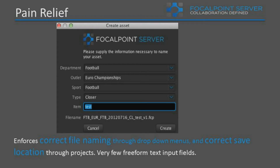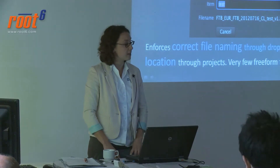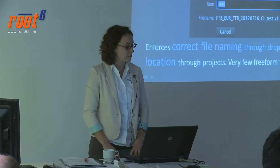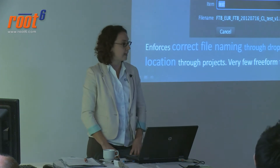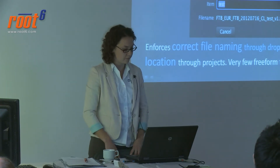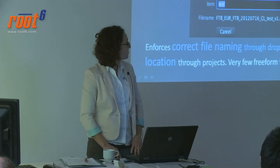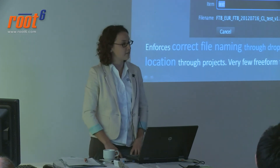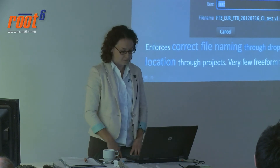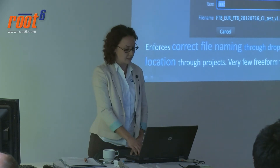Our answer was Focal Point Server. This is what you'd be faced with to create a project. You drag and drop everything - no free-form text to minimise errors, typing errors, spelling errors - so that when you search for things later it can only be 'football' spelled correctly and everything in that search will come up. They asked specifically for one thing, the item name, to be typed in so you can find it by the exact name if you want. They customised it to their specific needs.